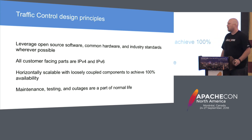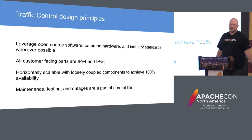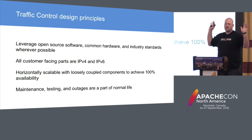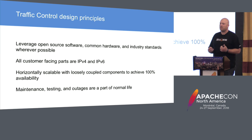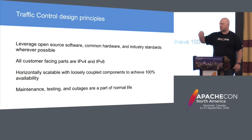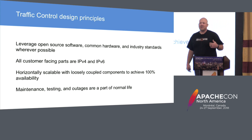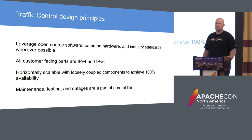The system is going to be horizontally scalable. We want stateless components that are loosely coupled. And we want 100% availability — we can't take the CDN down for maintenance. You can't just tell everybody to stop streaming, stop getting your videos or images or static website content. Stop it, we've got to upgrade. So we had to build something that was 100% available. We also had to ingrain in the culture that maintenance, testing, and outages were going to be a part of normal life. If you're a CDN, you're really close to the network. There are these big things called bulldozers or tractors, and they like to cut fiber — we've got to figure out how to deal with that. There was a fiber cut last night, actually, and the CDN kept running — no problem. It happens all the time.